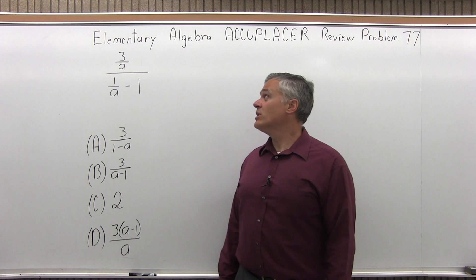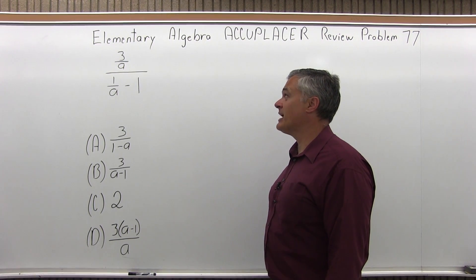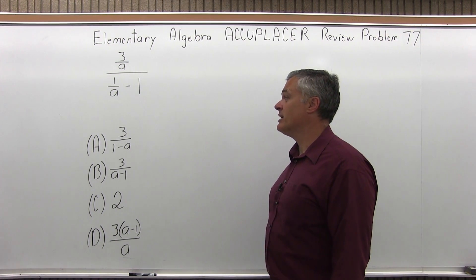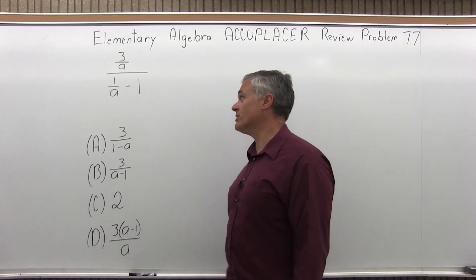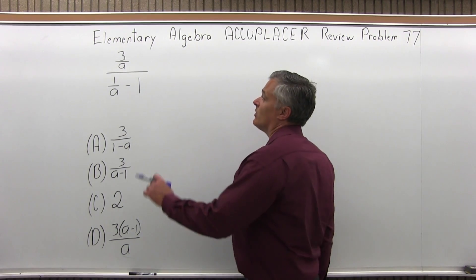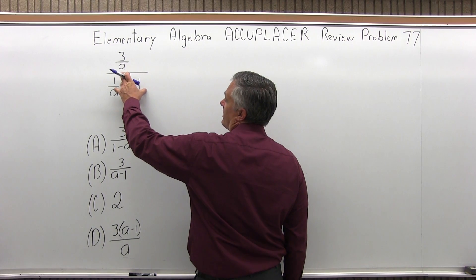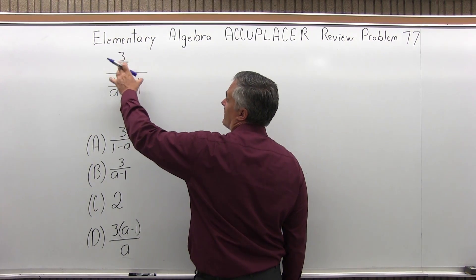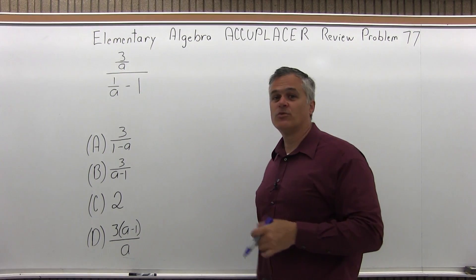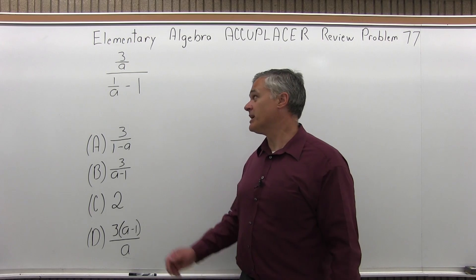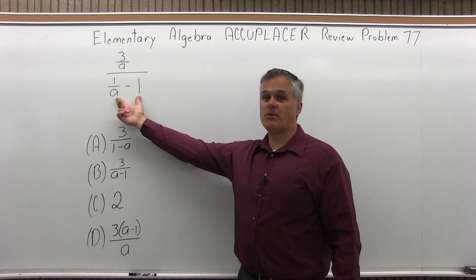We have 3 over a, over 1 over a minus 1, and we want to see which one of four options that equals. My goal is to make the bottom part of this big fraction into just a single fraction with a numerator and a denominator. To do that, I'm going to have to make a common denominator.